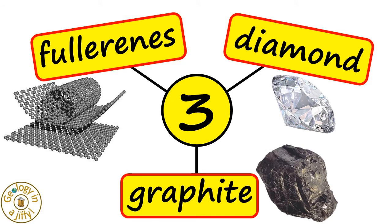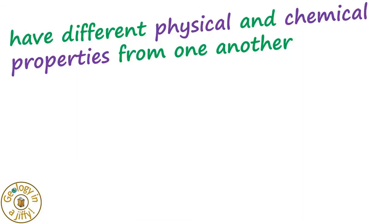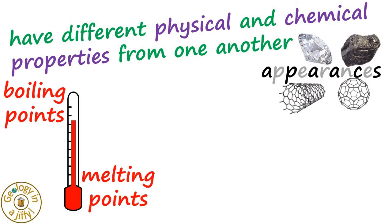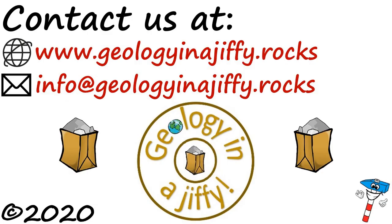The allotropes of carbon, all with their different physical and chemical properties from one another, such as their appearance, melting and boiling points, hardness values, and reactivities. Please subscribe to my channel. Bye!